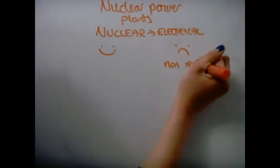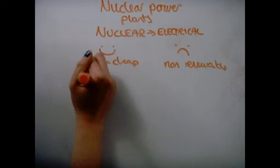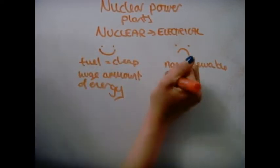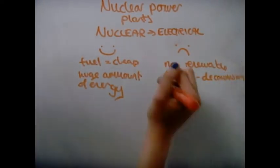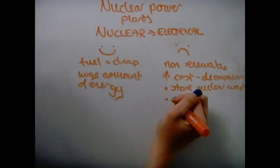Nuclear power plants are an alternative, but it isn't renewable. The fuel is cheap and produces a huge amount of energy. However, the cost to decommission a plant and storing radioactive waste is high, and there is always a chance of an accident occurring which poses a long-lasting risk to the environment.